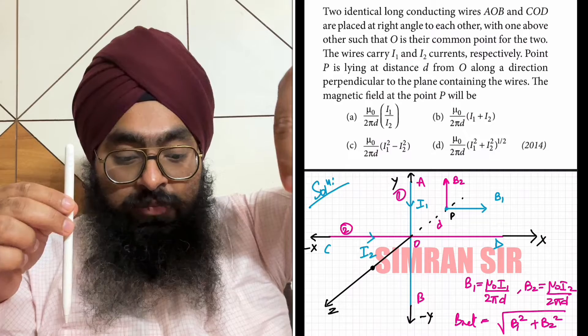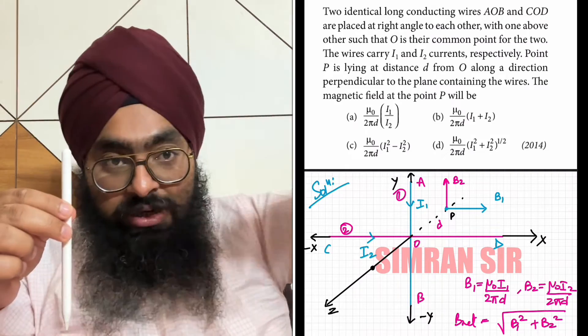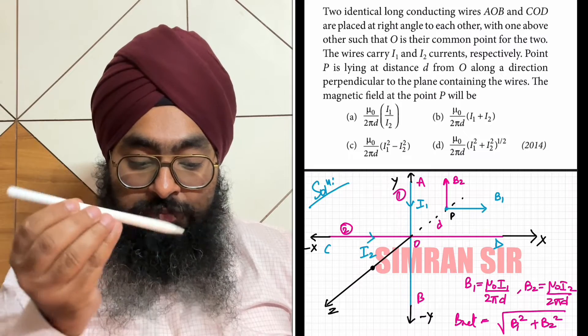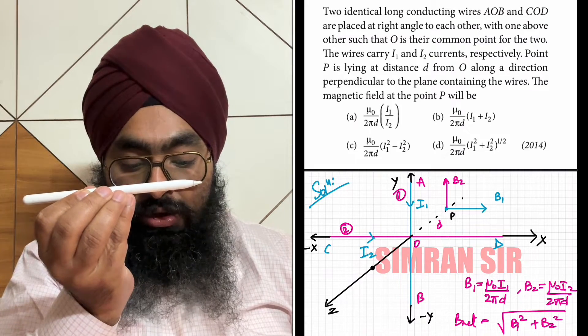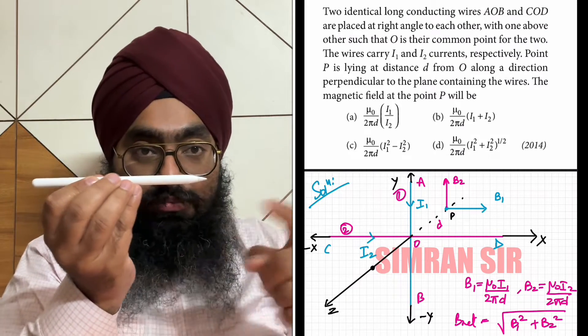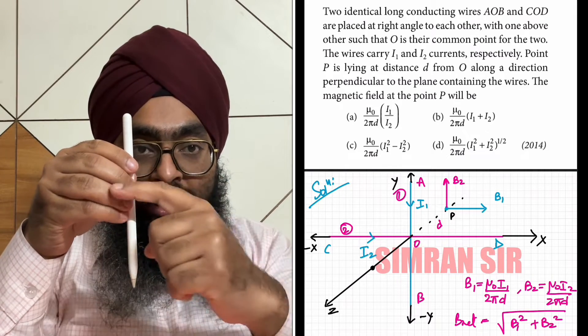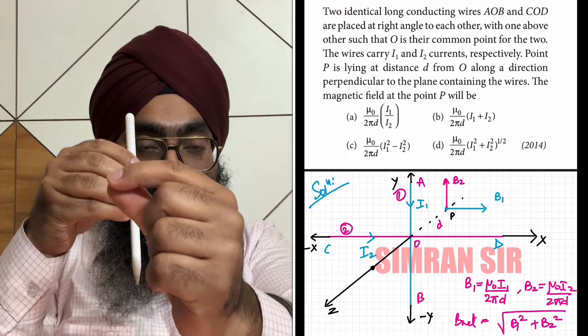Now discussing the blue wire, the COD wire. Current is going in this direction, and point P is here, perpendicular to this wire as well.